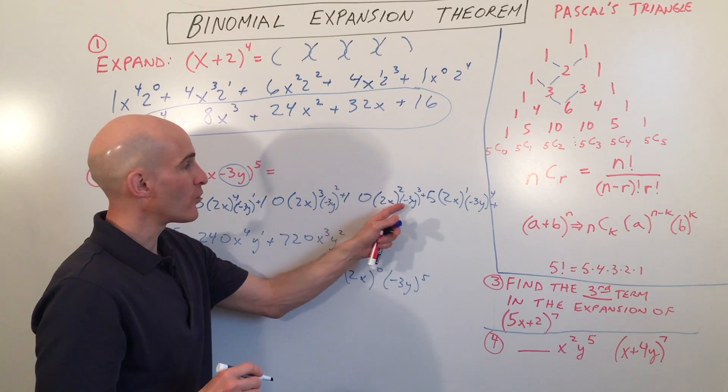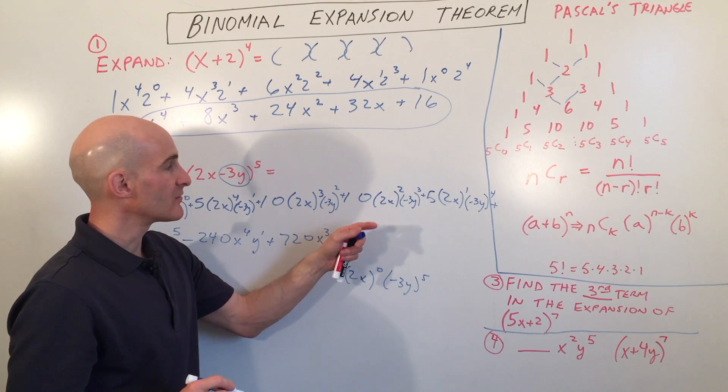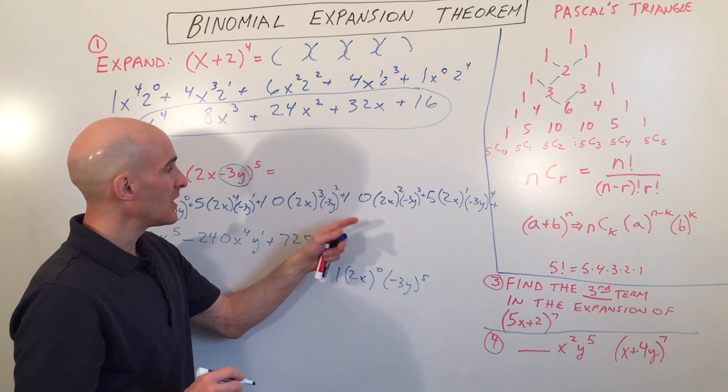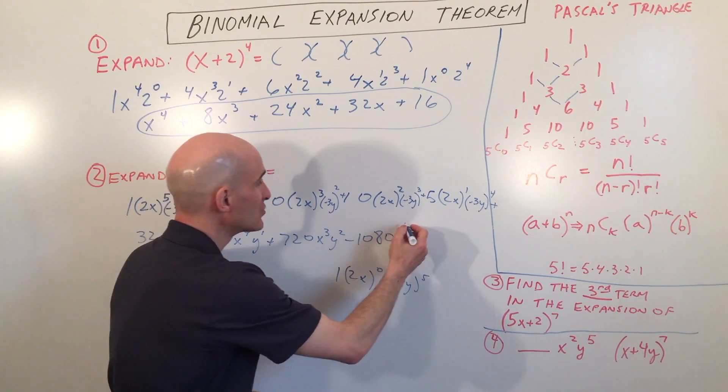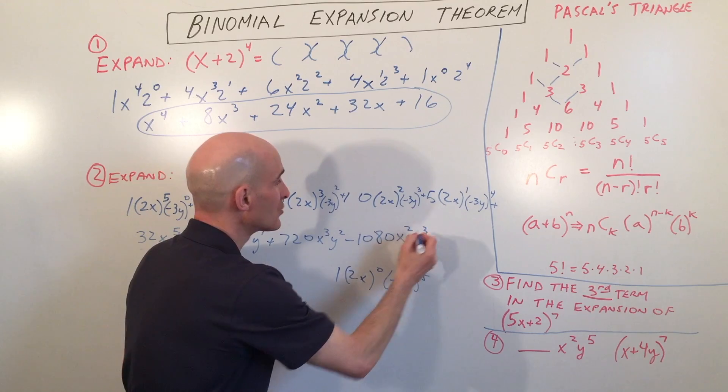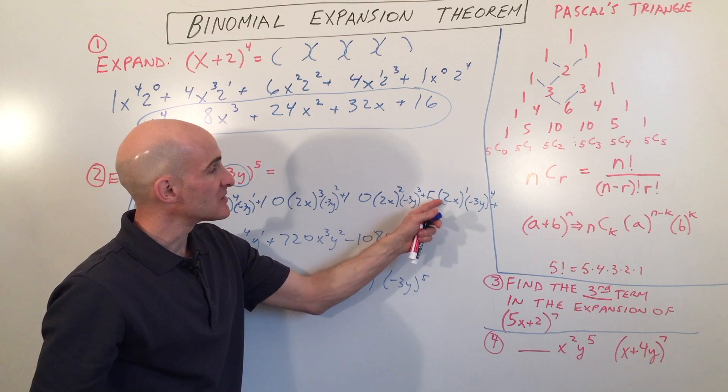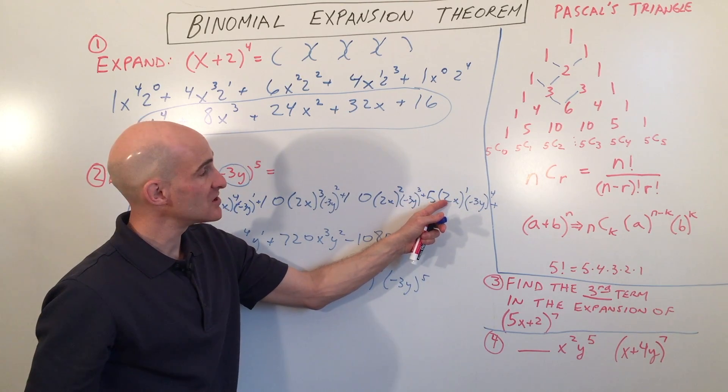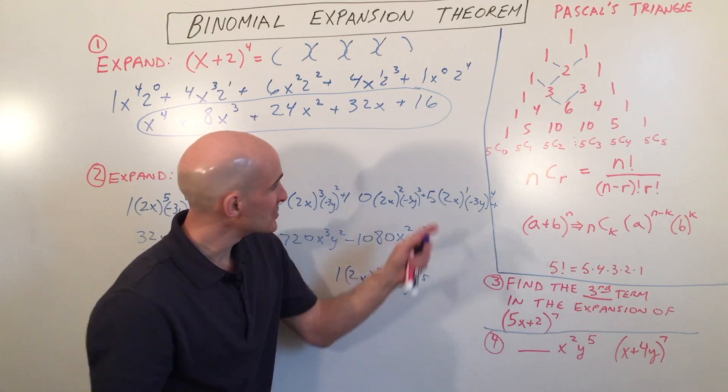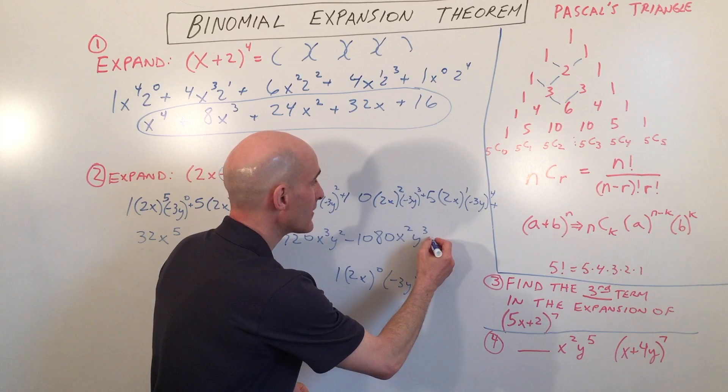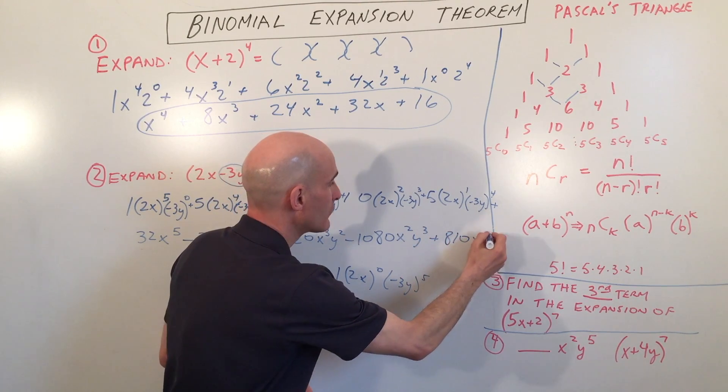And keep going here. So 2 squared is 4, negative 3 cubed is negative 27. Let's see, negative 54, negative 108 times 10, that would be negative 1080. You can, of course, use a calculator to do these calculations. I'm just doing them in my head here. Negative 3 to the fourth is 81, times 2 is 162, times 5 is how much? Or we'll use the calculator. So this is 5 times 2 is 10 times 81 is 810. So that's going to give you 810x y to the fourth.